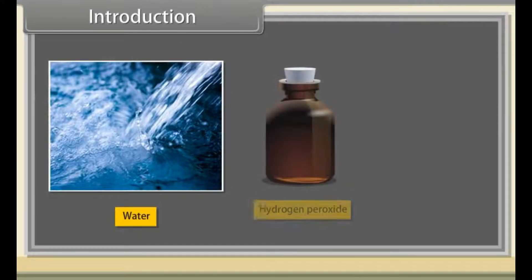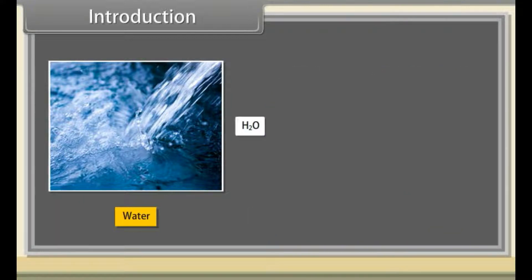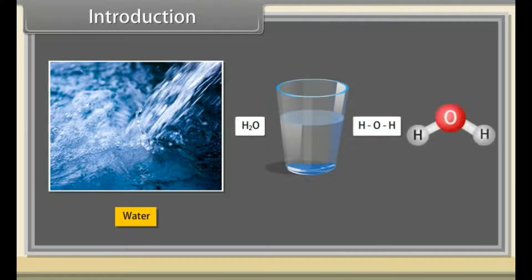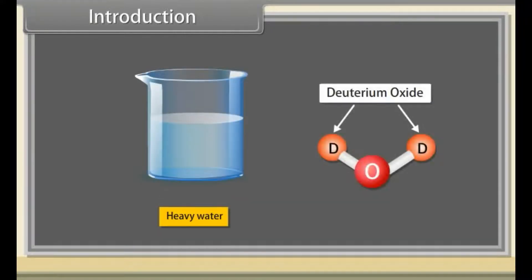Hey kids, today we will learn about water, hydrogen peroxide, and heavy water. Water is a chemical substance with the formula H2O. It is a colorless and transparent liquid containing one oxygen atom and two hydrogen atoms. Hydrogen peroxide is a combination of hydrogen and oxygen with the formula H2O2. Heavy water is deuterium oxide, another form of water which contains the hydrogen deuterium isotope.